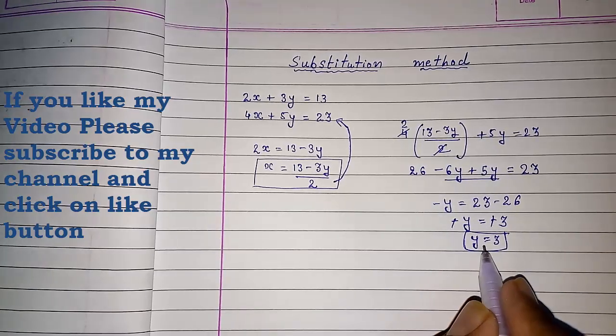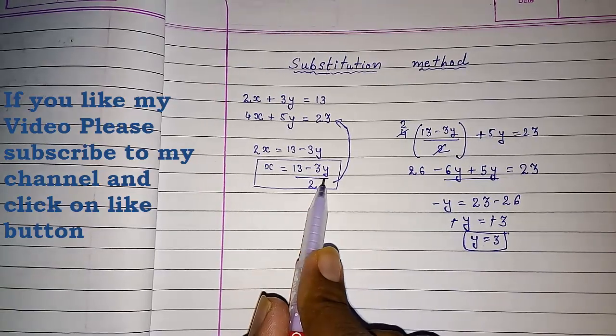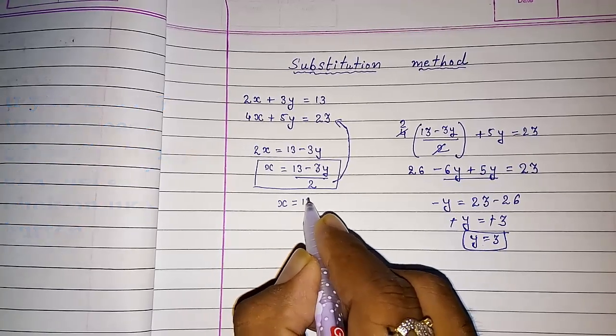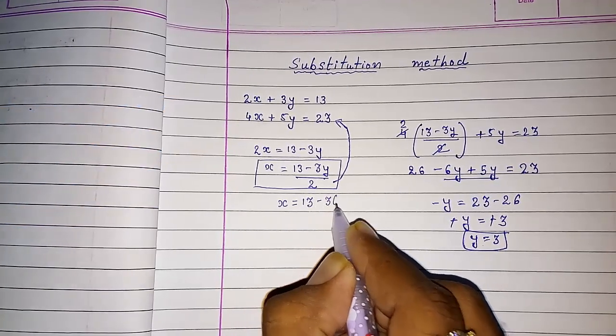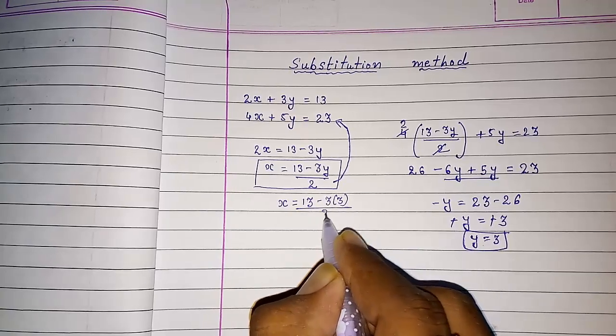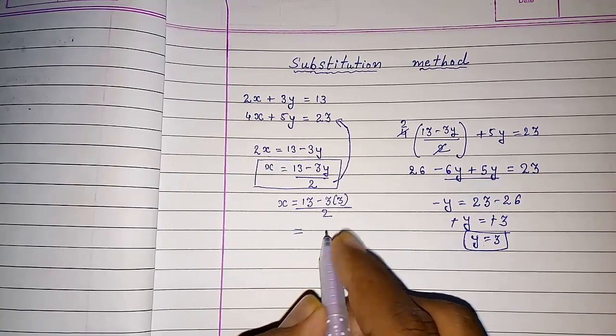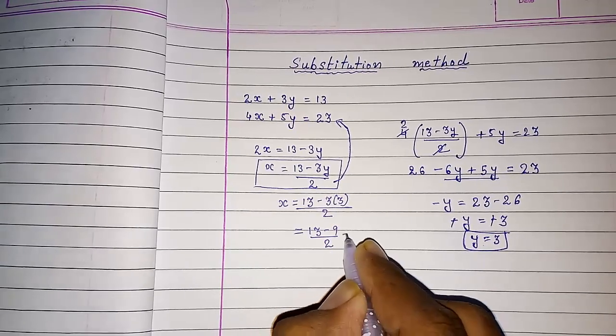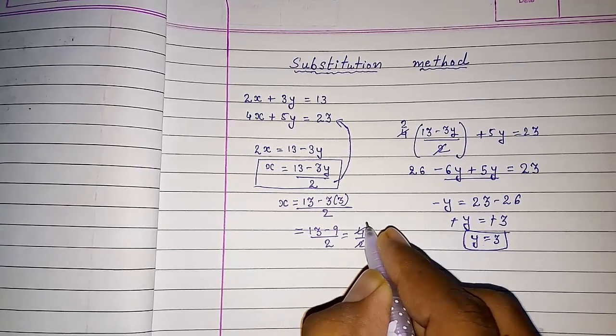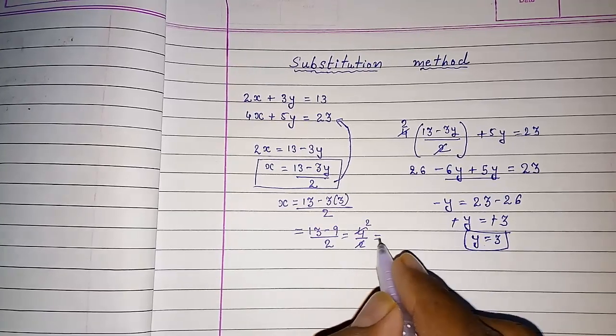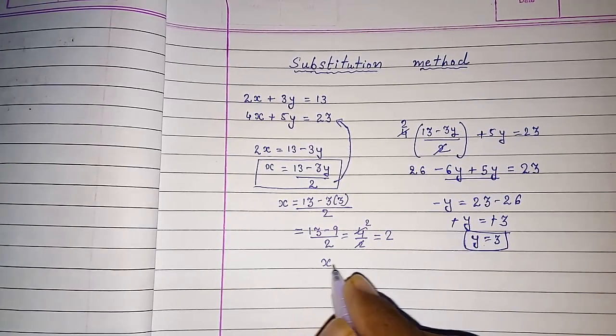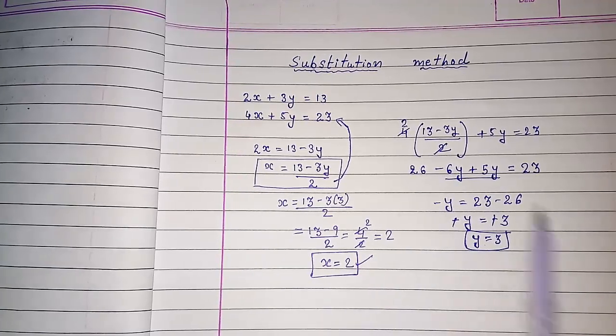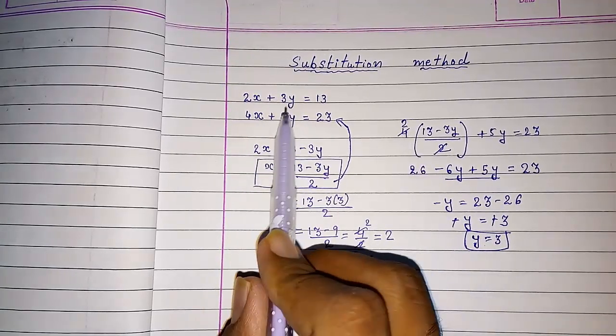Now we have to substitute this y value back. x = (13 - 3 × 3) / 2, so x = (13 - 9) / 2 = 4 / 2 = 2. So x = 2.